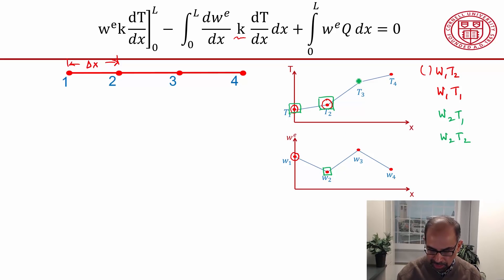Then when you do the integration over the second element, you will get w2 multiplying t2, so you can clump that over here, and then you'll get w2 multiplying t3. But you won't get any terms where w2 is multiplying t4. So w's will multiply only the neighboring nodal temperatures.